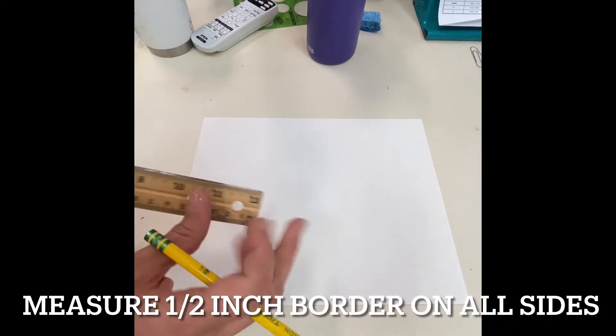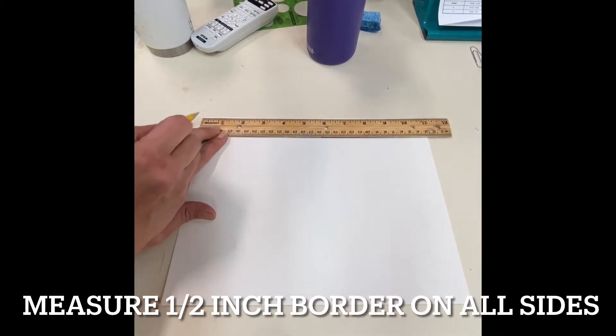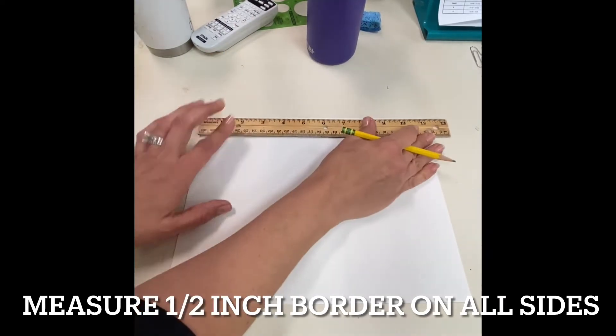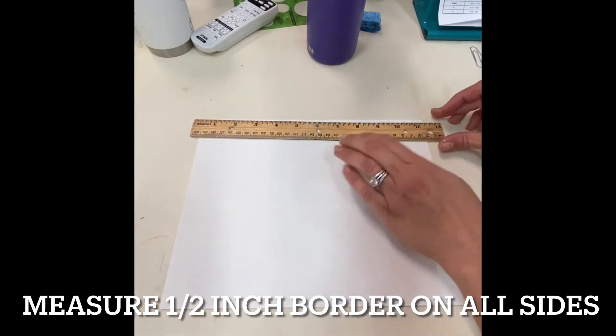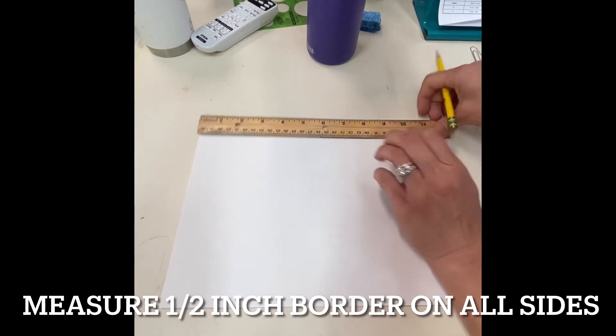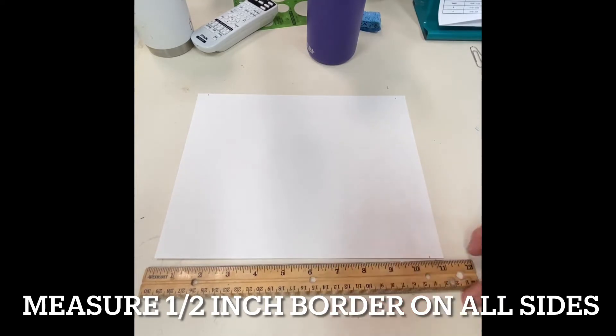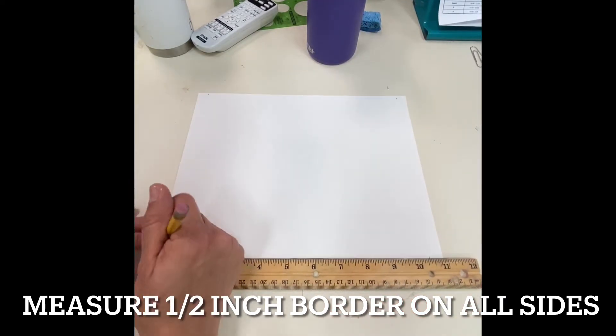Now you're going to take your piece of drawing paper and create a half inch border going all the way around the paper on all four sides. Please use a ruler to make half inch marks at the top and bottom of each side, and then connect your lines.